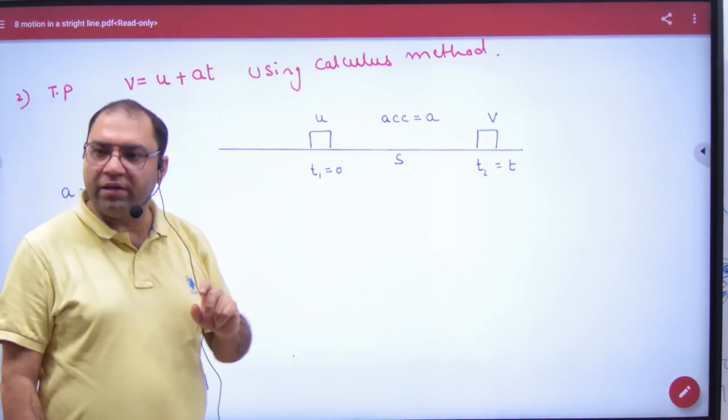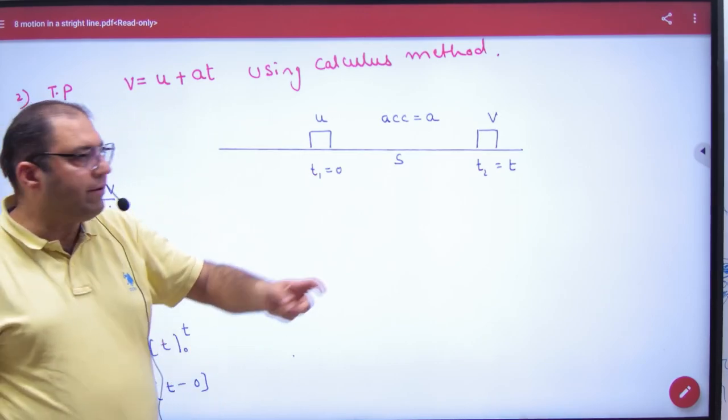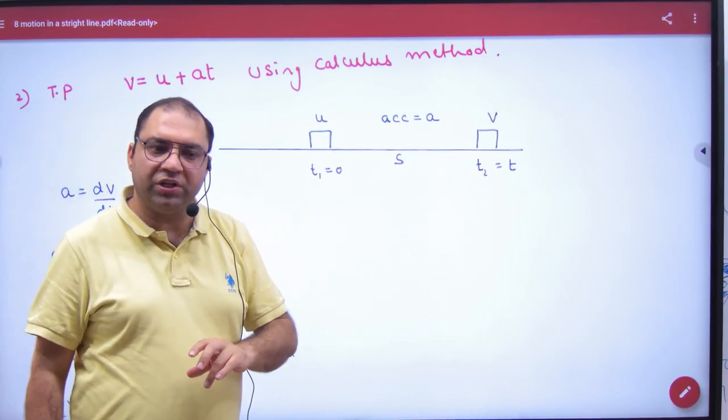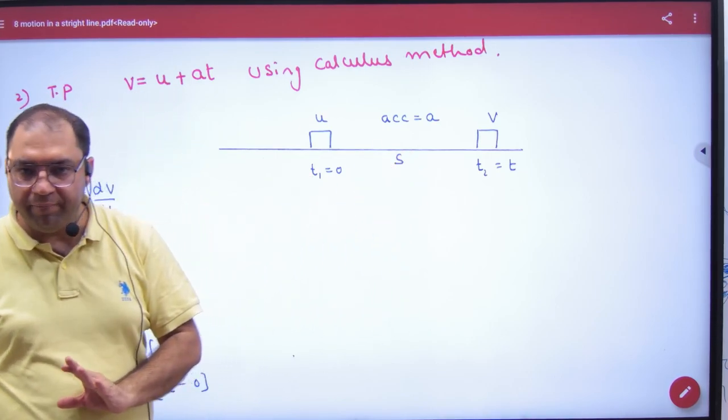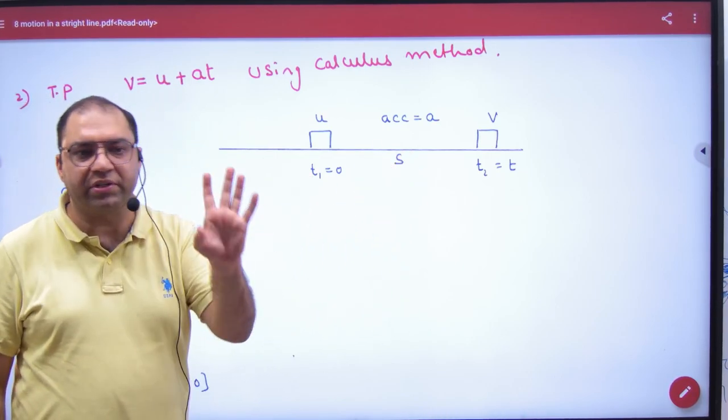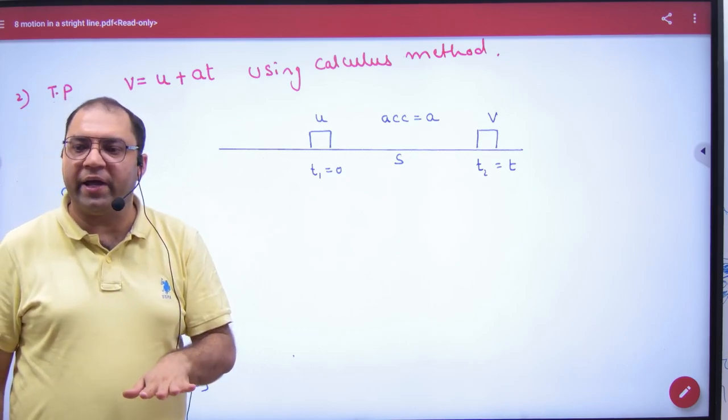When the time taken is 0, that's when u is. And at time t₂, which is t, velocity is v. Displacement is like this. Acceleration a is constant. We call acceleration a constant.